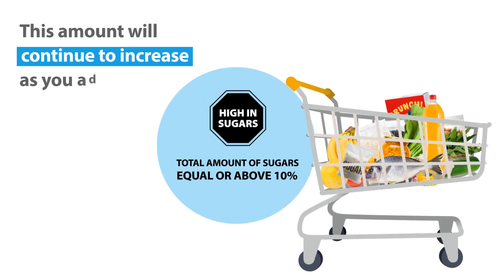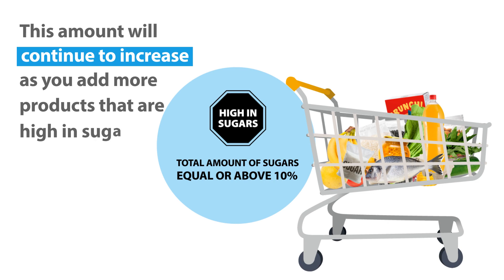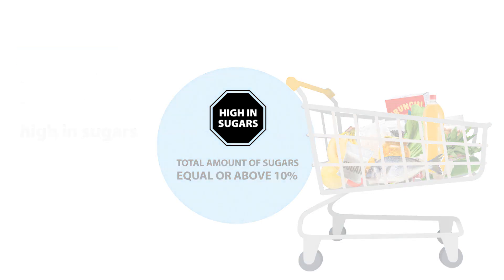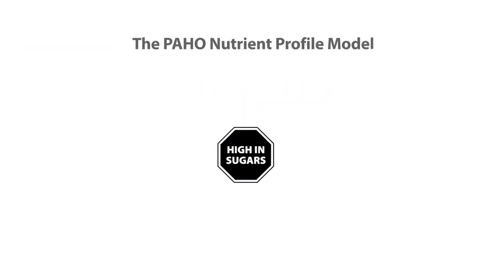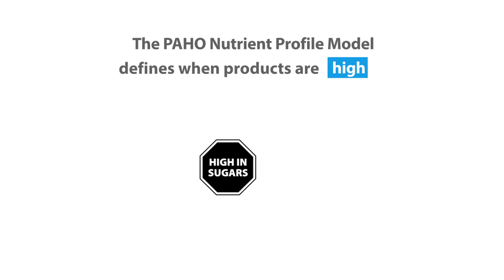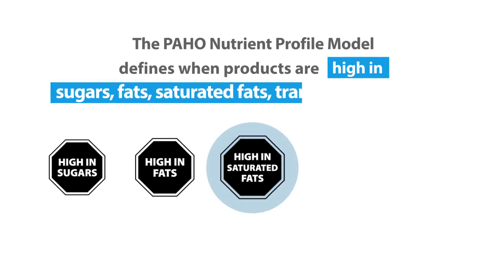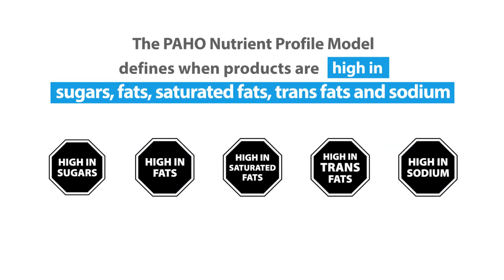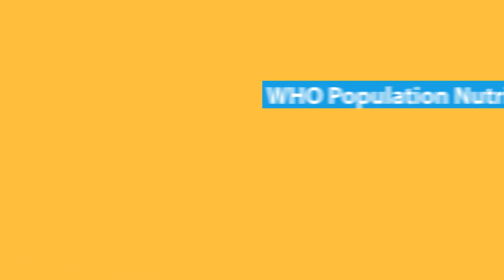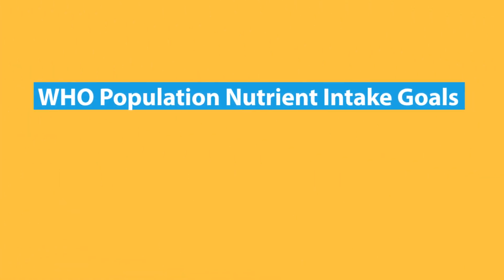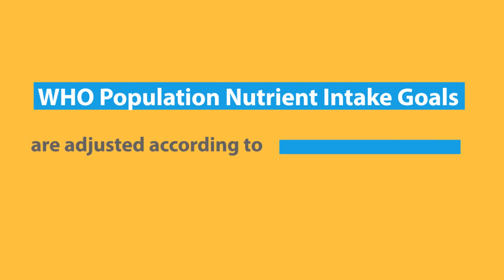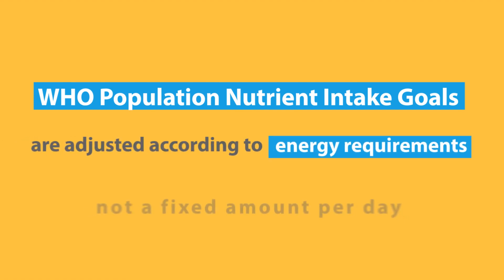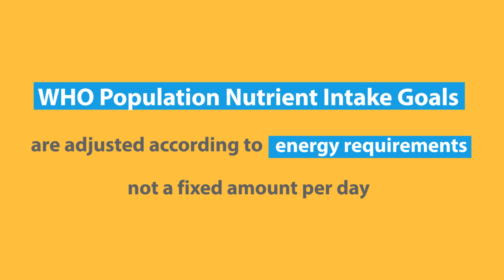Now the total amount of sugars will be above the recommended daily intake, and this amount will continue to increase as you add more products that are high in sugars. The PAHO Nutrient Profile Model defines when products are high in sugars, fats, saturated fats, trans fats, and sodium. It is based on the WHO population nutrient intake goals, which are adjusted according to energy requirements — not a fixed amount per day.